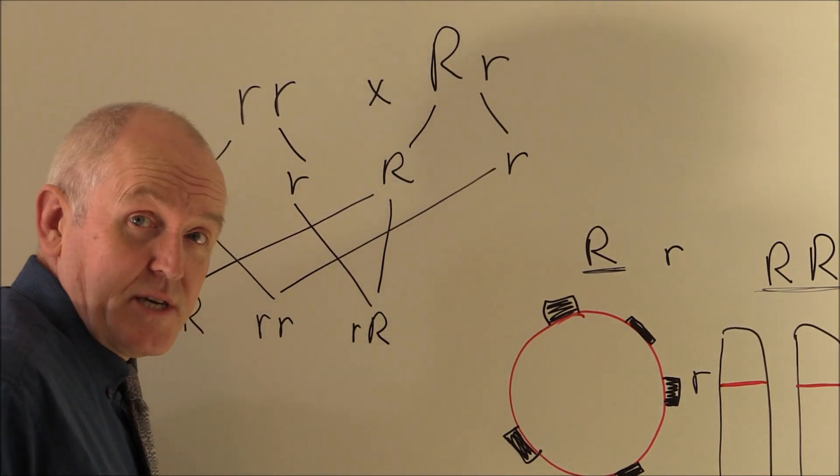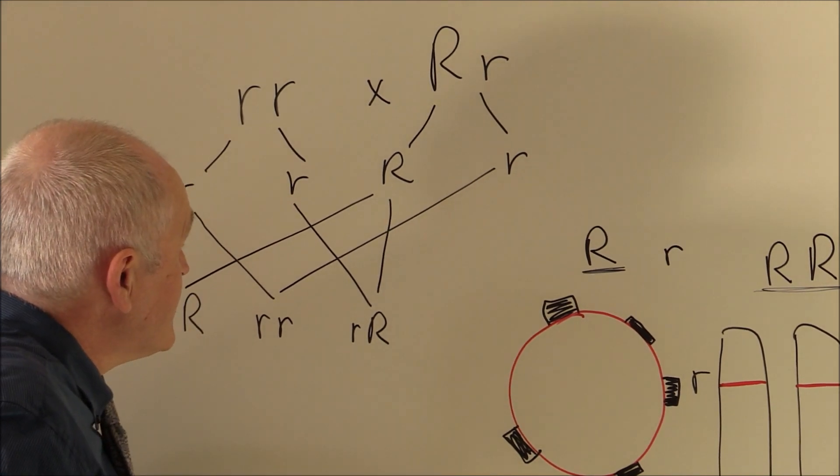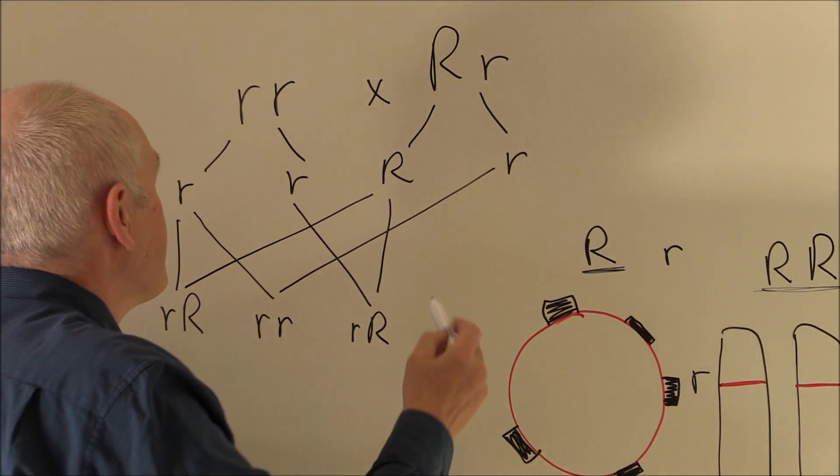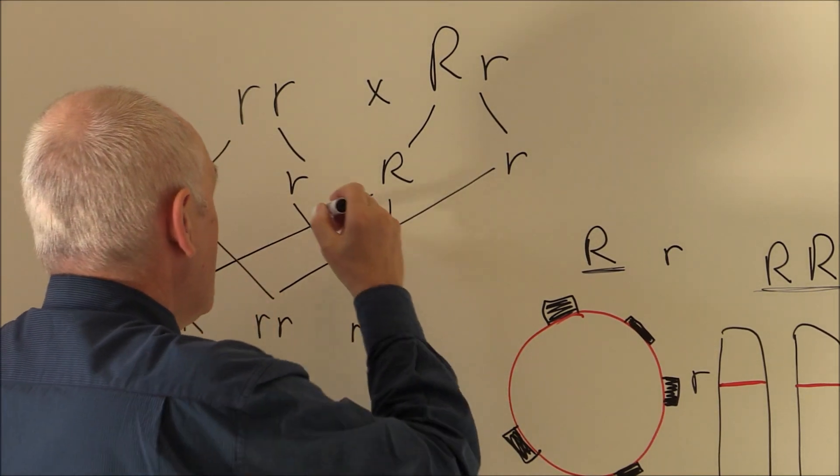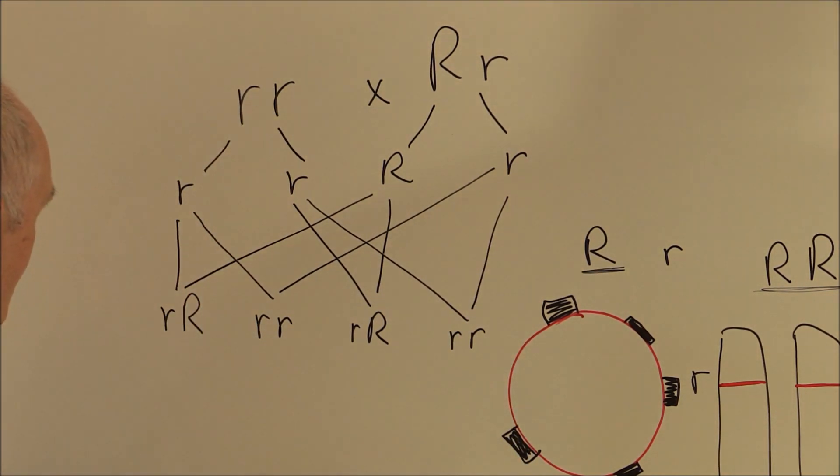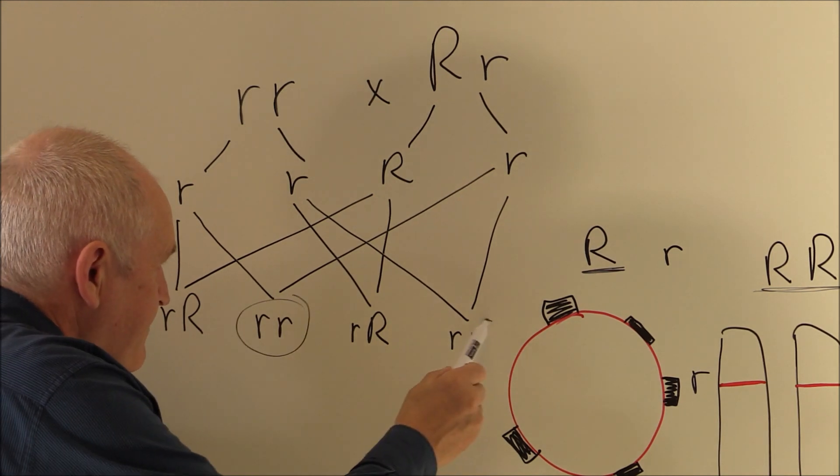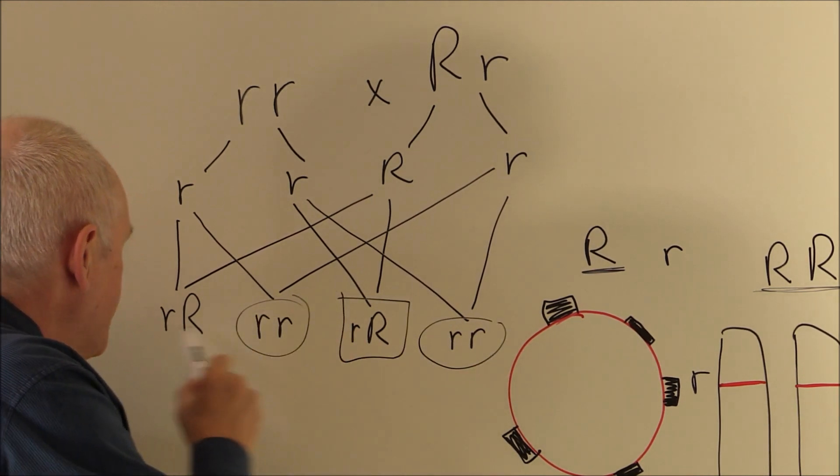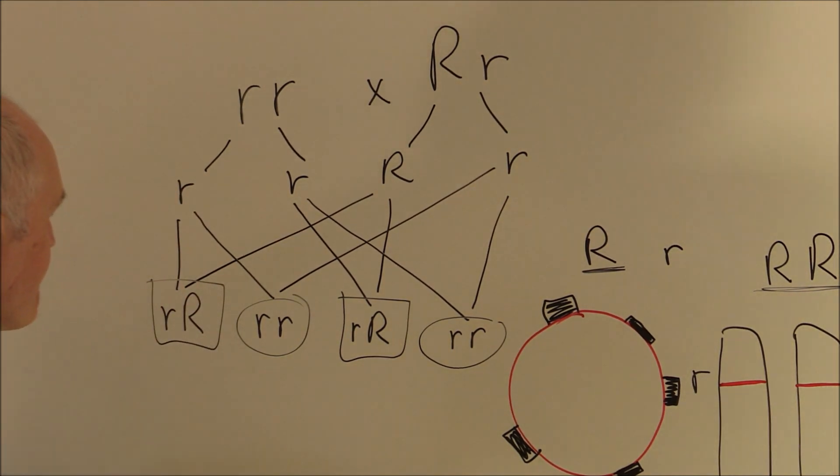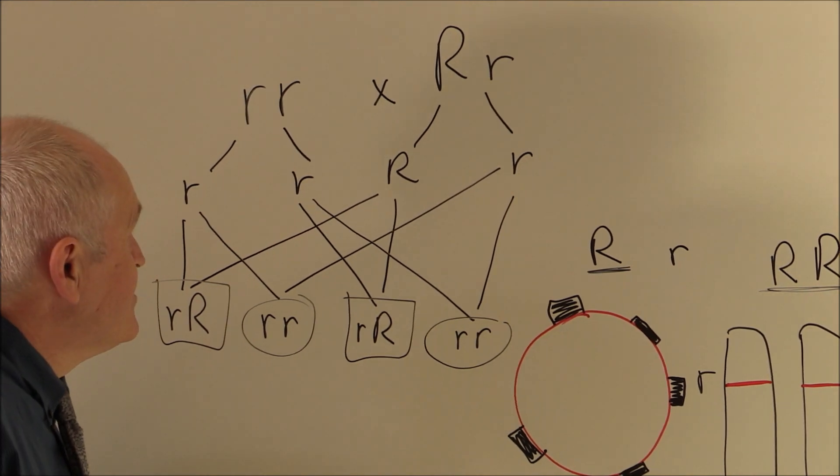Because there is one copy of the Rhesus gene present, which of course is dominant, or it could be that one combining with that one, which will give us two small r's. So here we see the probability is 50-50, that any particular fetus will be Rhesus positive. The presence or absence of the Rhesus factor is entirely genetic.